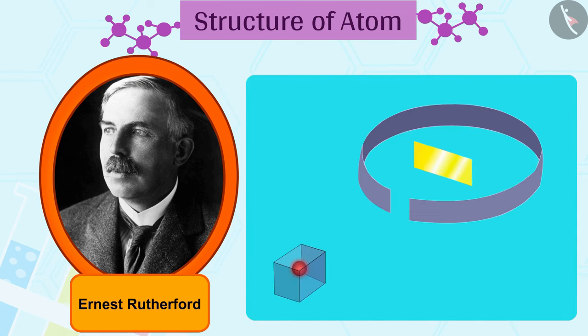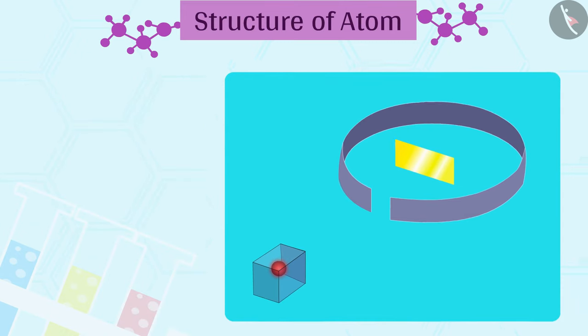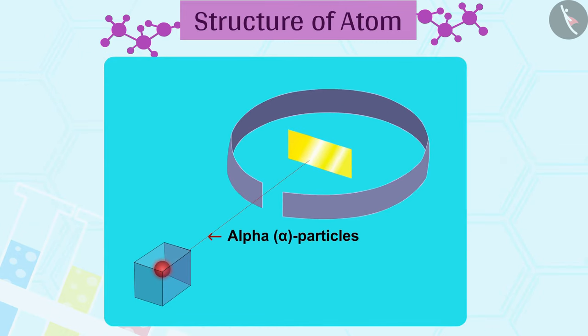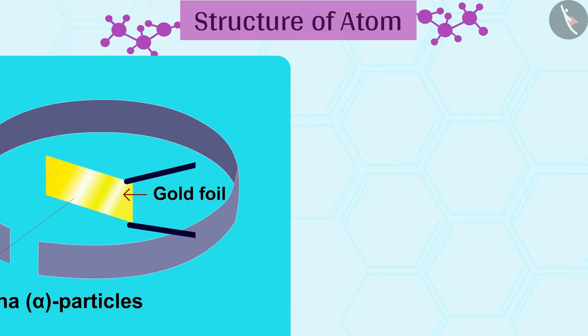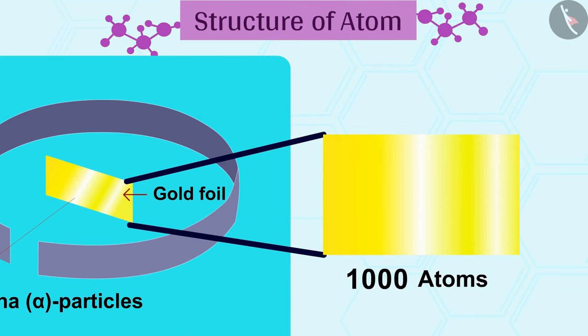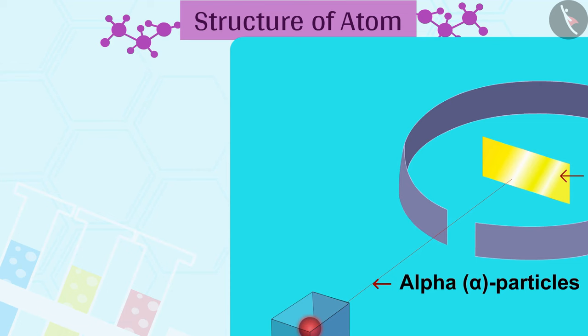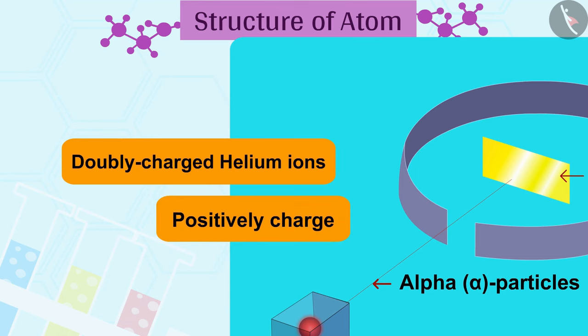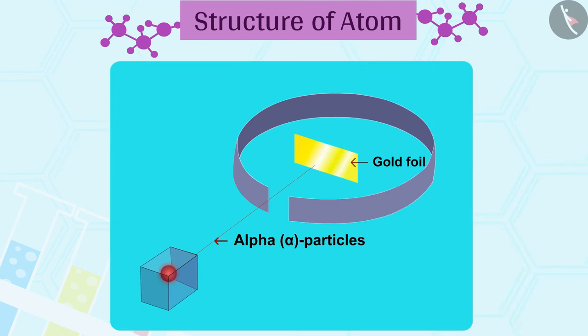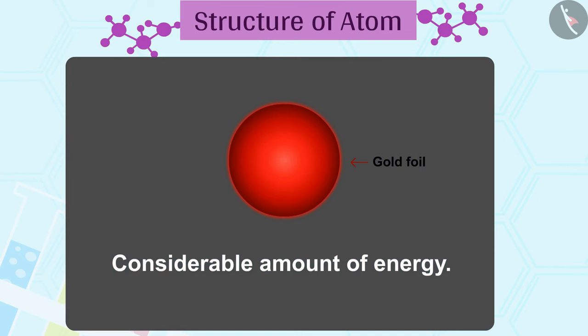Rutherford designed an experiment for this. In this experiment, fast moving alpha particles were made to fall on a thin gold foil. He selected a gold foil because he wanted as thin a layer as possible. This gold foil was about 1000 atoms thick. Alpha particles are doubly charged helium ions, positively charged, and since they have a mass of 4u, the fast moving alpha particles have a considerable amount of energy.